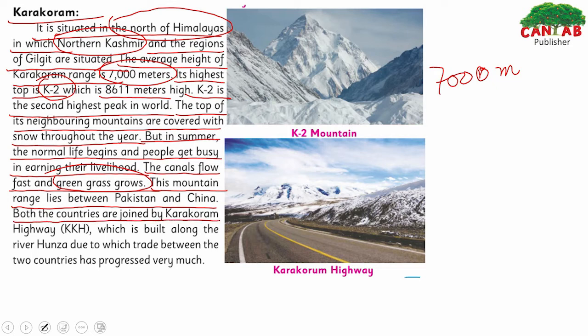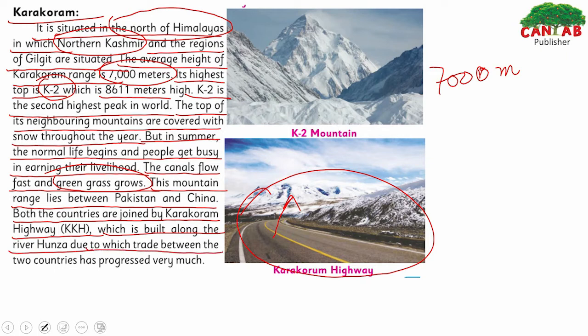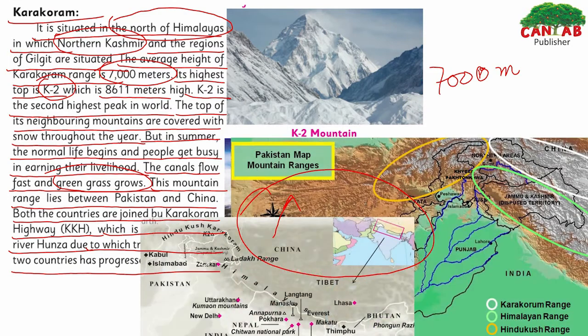Both countries — Pakistan and China — are joined by the Karakoram Highway, which is built along the Hunza River, due to which trade between the two countries has progressed very much.